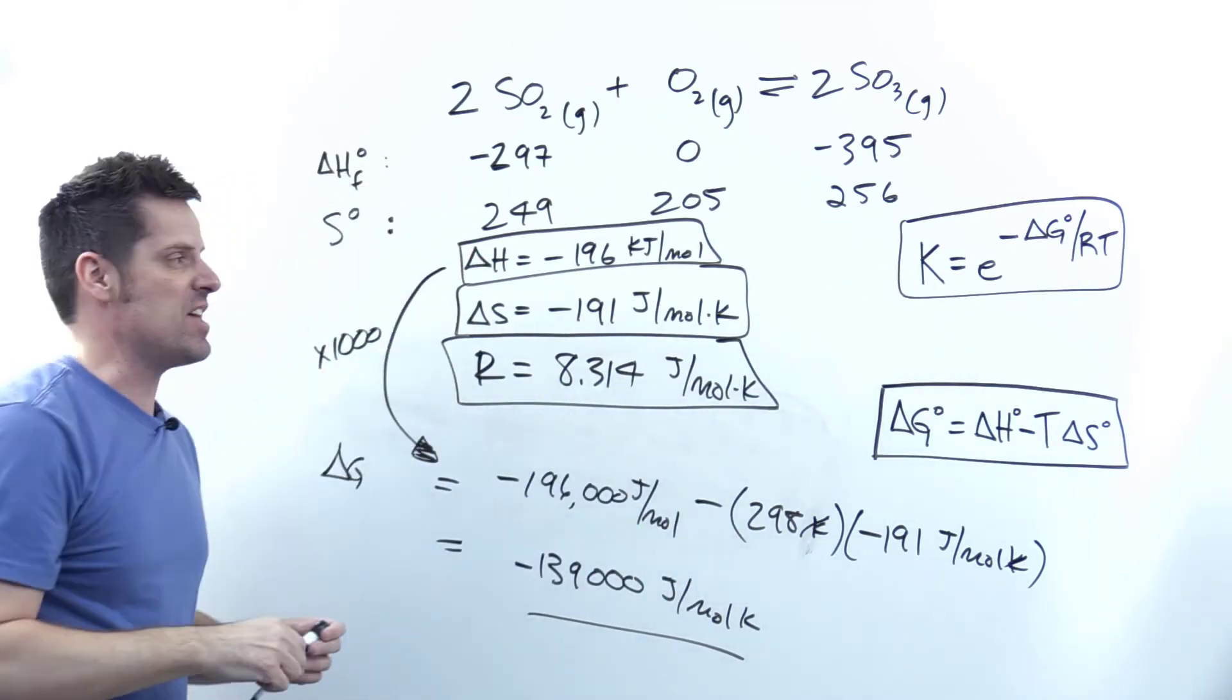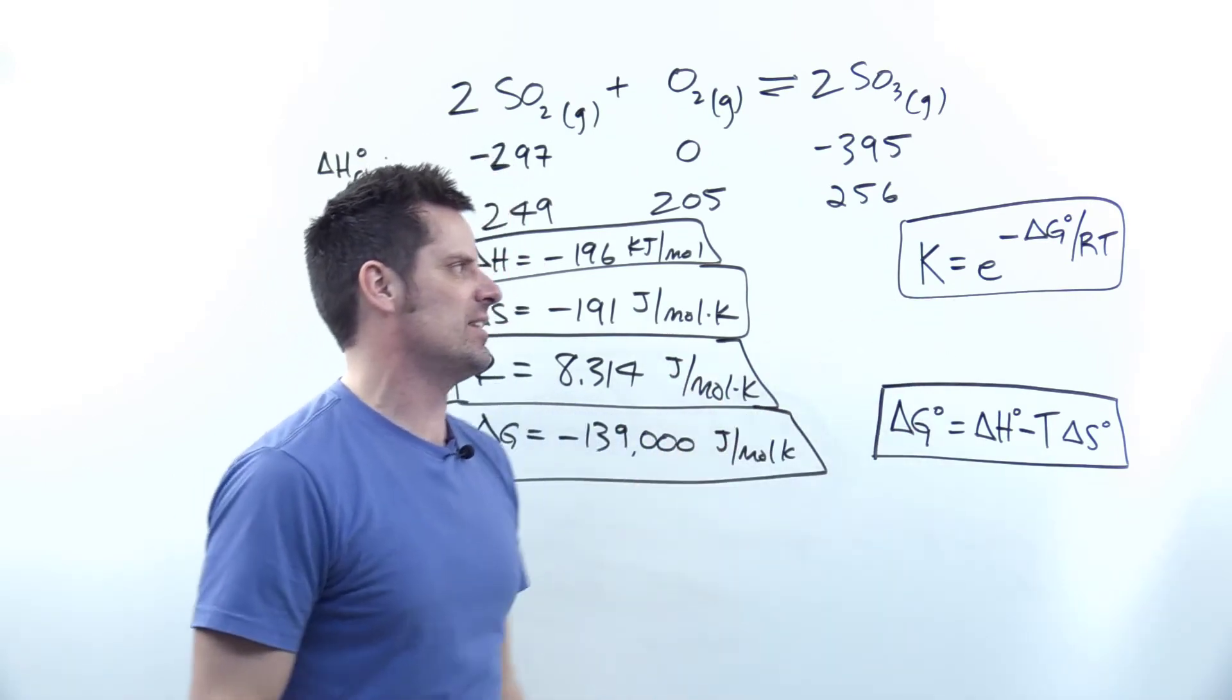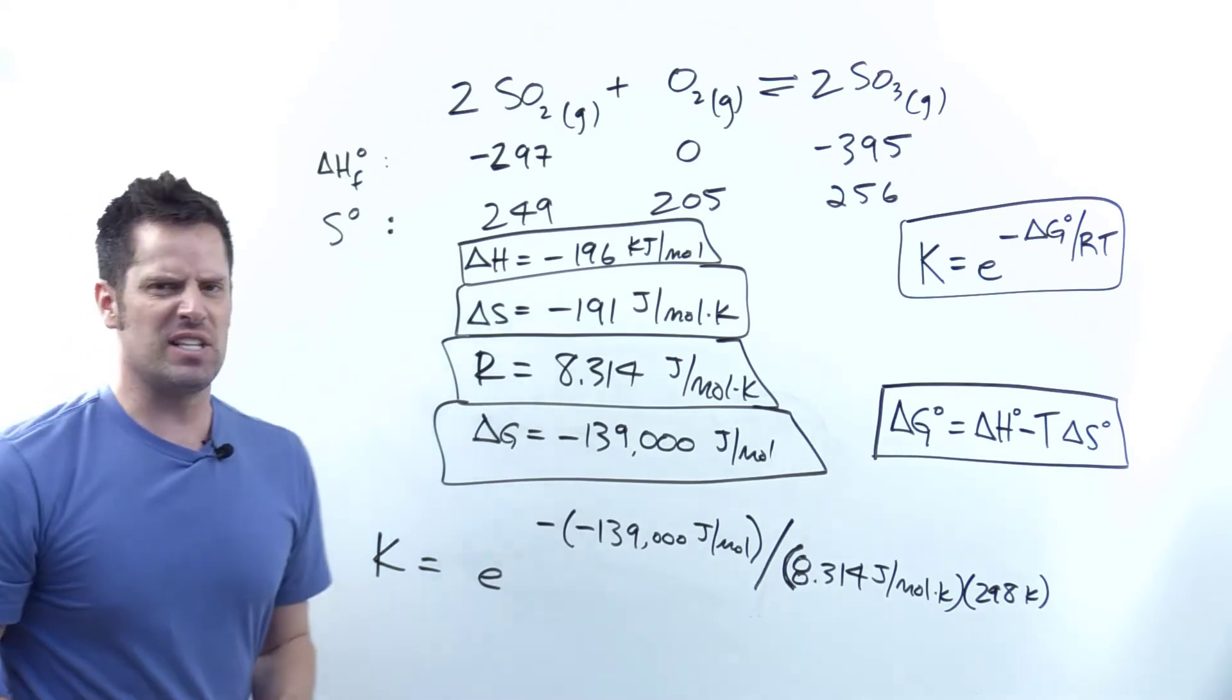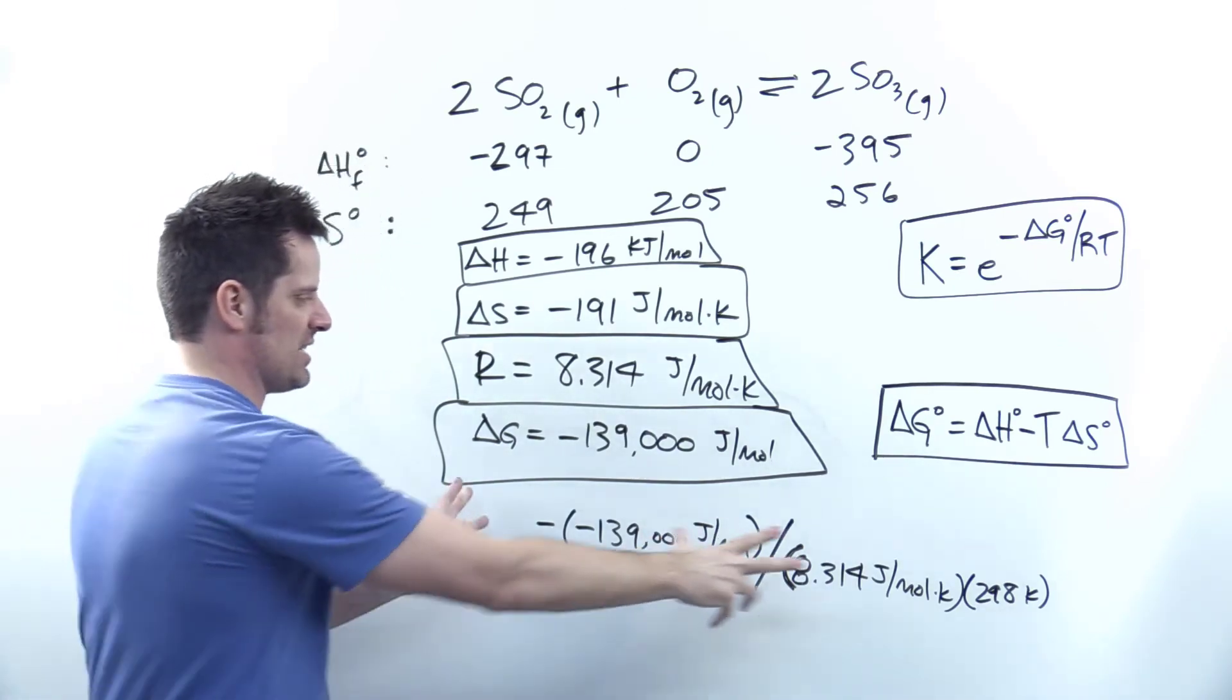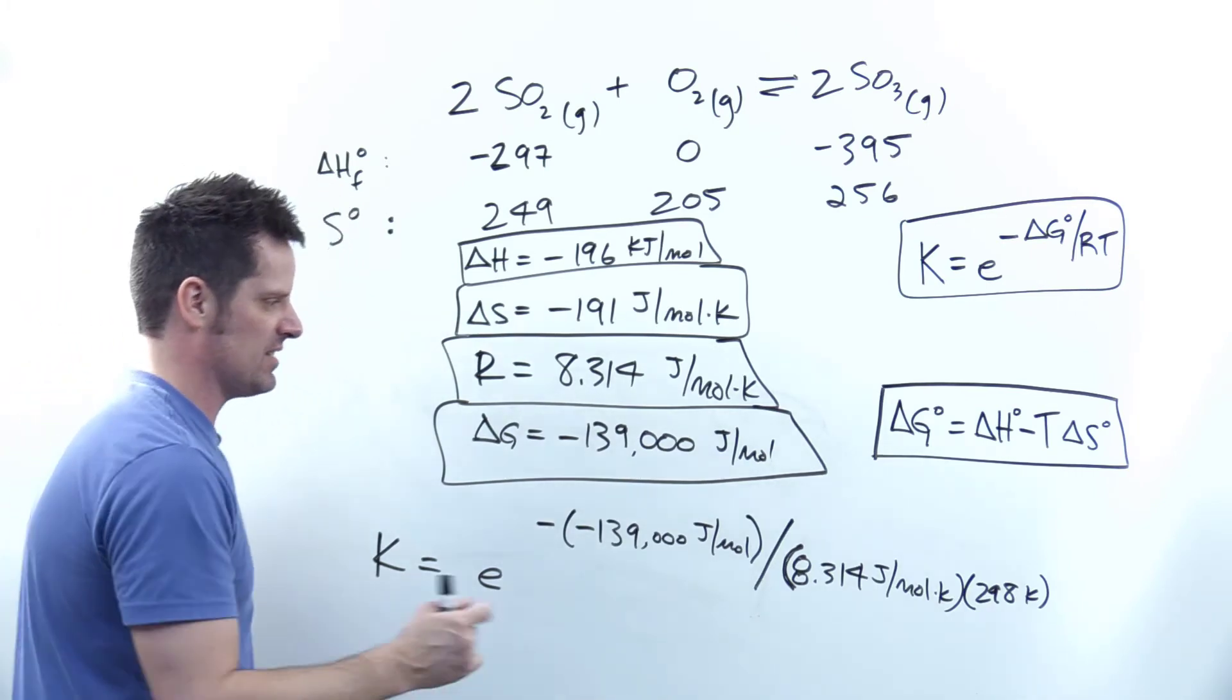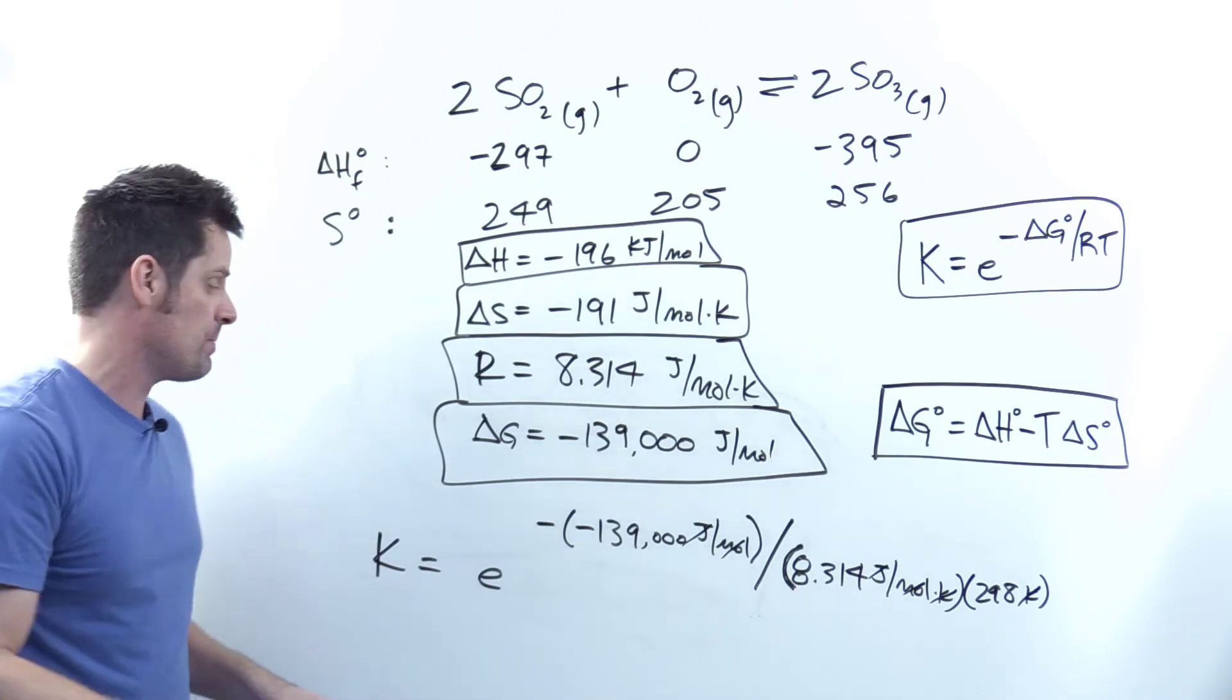The equilibrium constant expression is equal to Euler's number raised to negative delta G divided by RT. Let's insert all these terms where they belong. It's very complicated and easy to get wrong if you try to do it all in one step. Unit-wise, everything cancels out: Kelvins cancel, joules per mole cancel, so the final equilibrium constant is a unitless number.